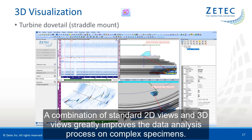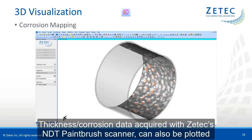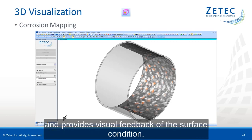The 3D visualization module allows for plotting the data in complex components. The combination of standard 2D views and 3D views greatly improves the data analysis process on complex specimens. Thickness corrosion data acquired with the CTEX MDT paintbrush scanner can also be plotted and provides visual feedback of the surface condition.